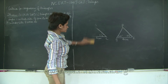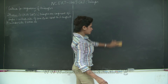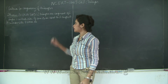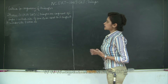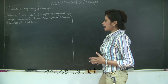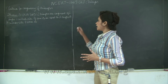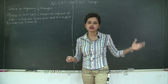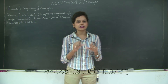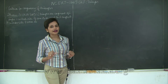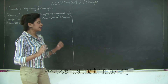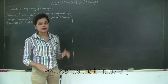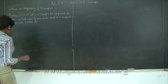Now we are going to learn the first theorem for Chapter 7 which is the ASA test of congruence. The theorem states: two triangles are congruent if two angles and the included side of one triangle are equal to two angles and the included side of another triangle. This is a slightly lengthy theorem but it is very simple. Now let's look at the proof.